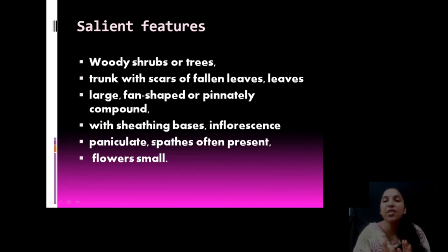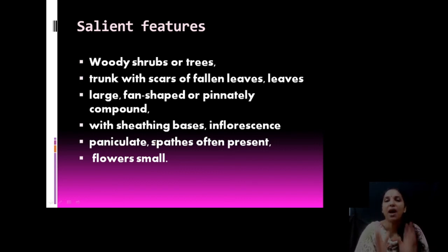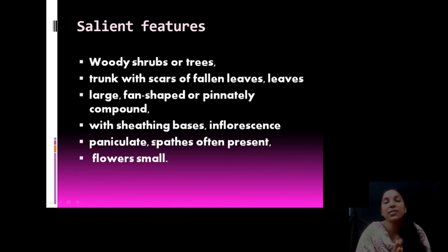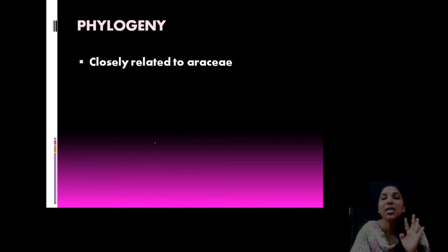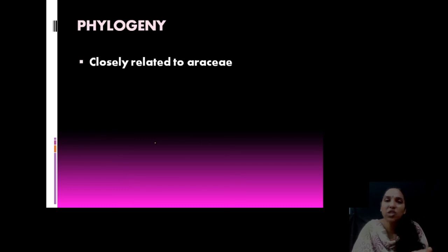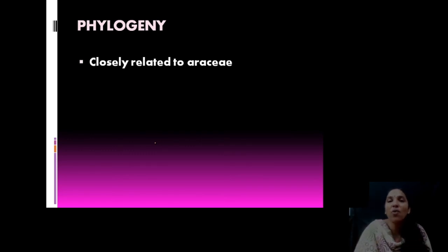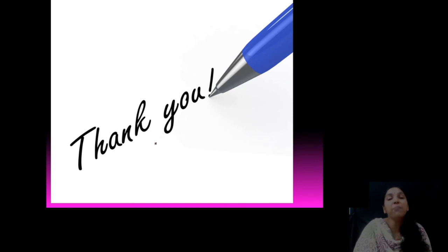The salient features of Arecaceae: they are woody shrubs or trees with a typical trunk bearing scars of fallen leaves. Leaves are large, fan-shaped or pinnately compound like coconut, with sheathing bases. Inflorescence is a spadix with a spathe, and panicles are also present. Flowers are small and trimerous. Phylogenetically, this family shows affinity or relationship with the family Araceae — the family of Anthurium and Colocasia.